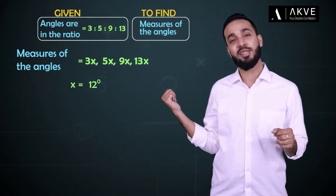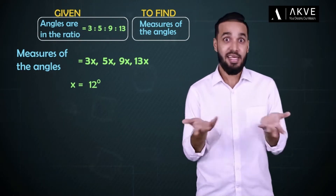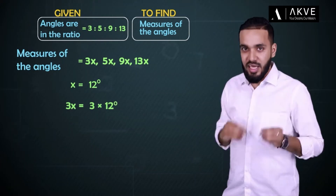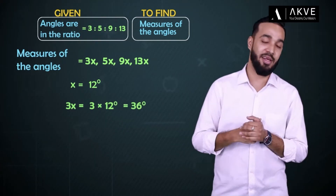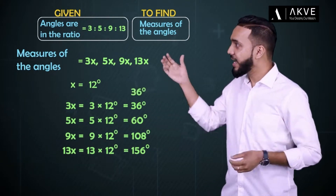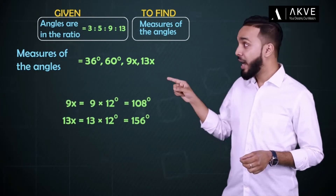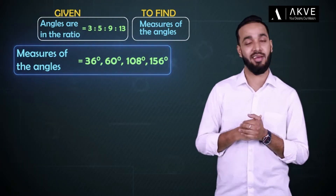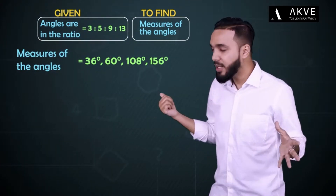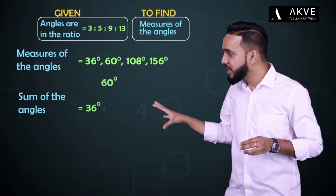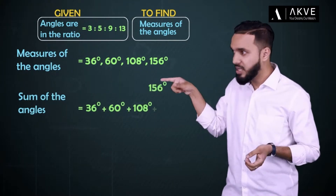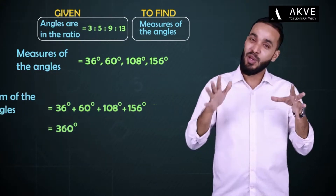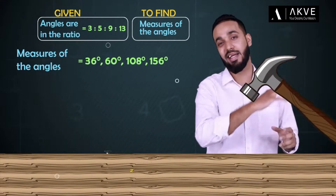Now that the value of x is known, finding the different angles is a cakewalk. 3x is just 3 × 12 degrees, which gives us 36 degrees. Similarly, the other angles are 60 degrees, 108 degrees, and 156 degrees respectively. To be sure of our answer, we can cross-check by adding all these angles to see if they add up to 360 degrees — and here they do. So we can be sure that we absolutely nailed it.